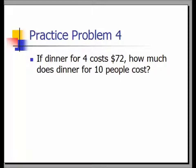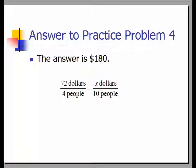Practice problem four: If dinner for four costs $72, how much does dinner for 10 people cost? The answer is $180. The proportion is $72 for 4 people equals x dollars for 10 people. Cross multiplying gives 720 equals 4x. Dividing both sides by 4 gives $180.